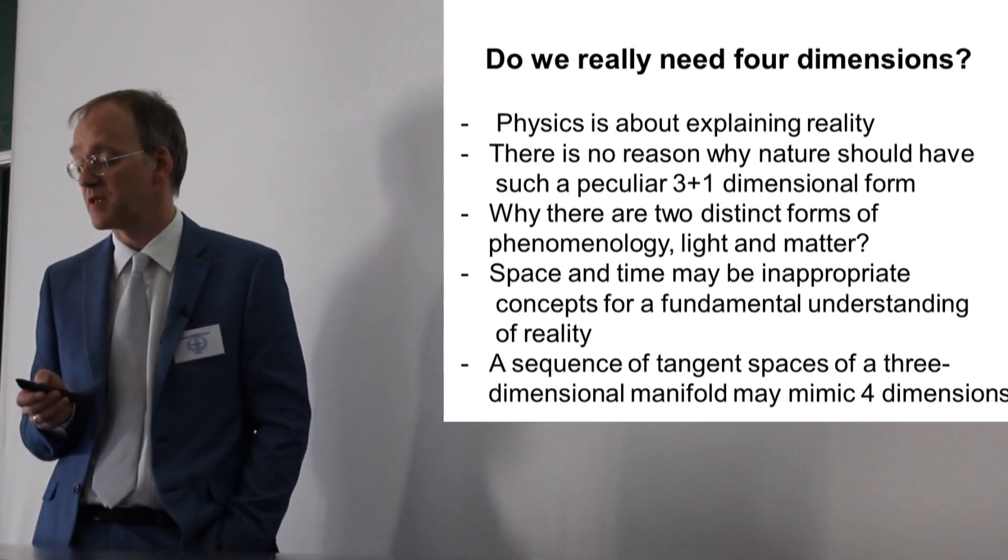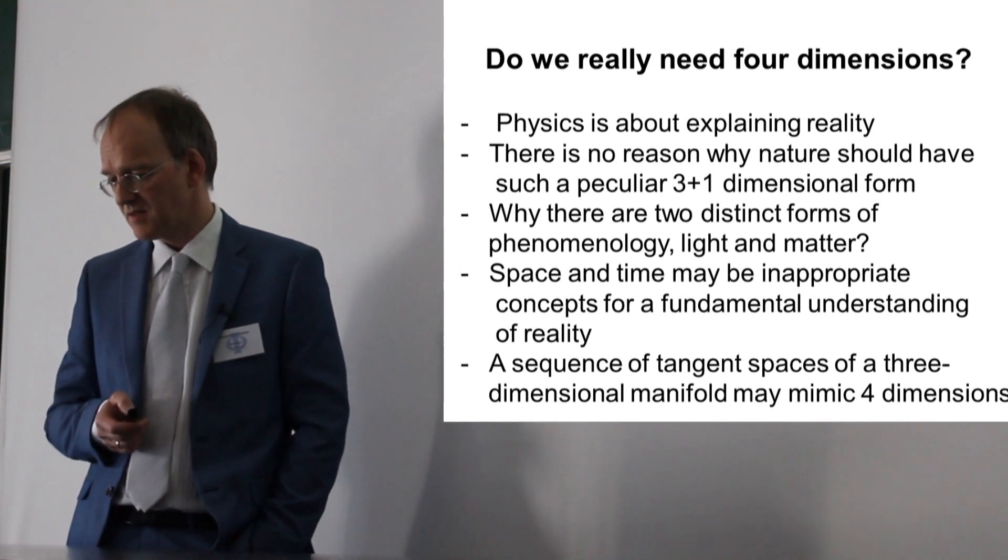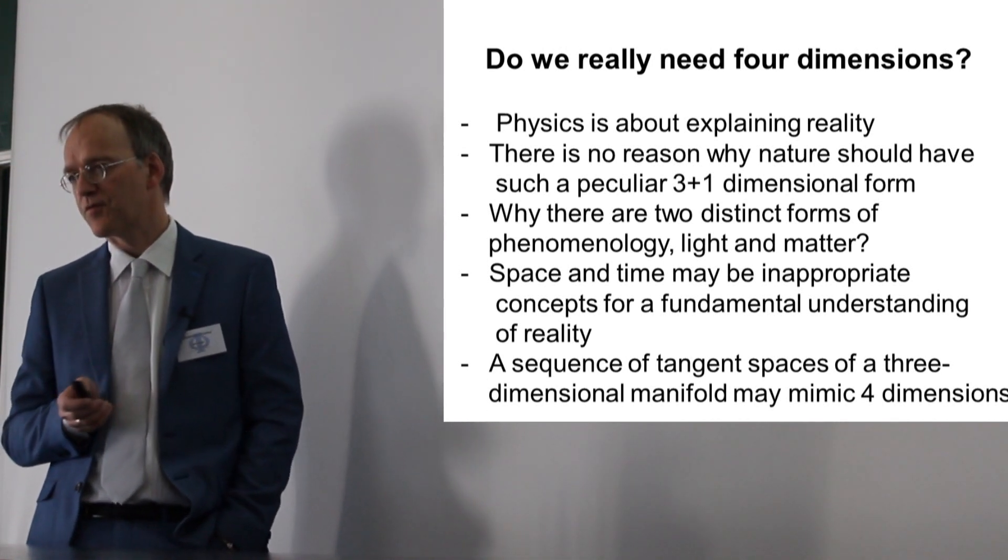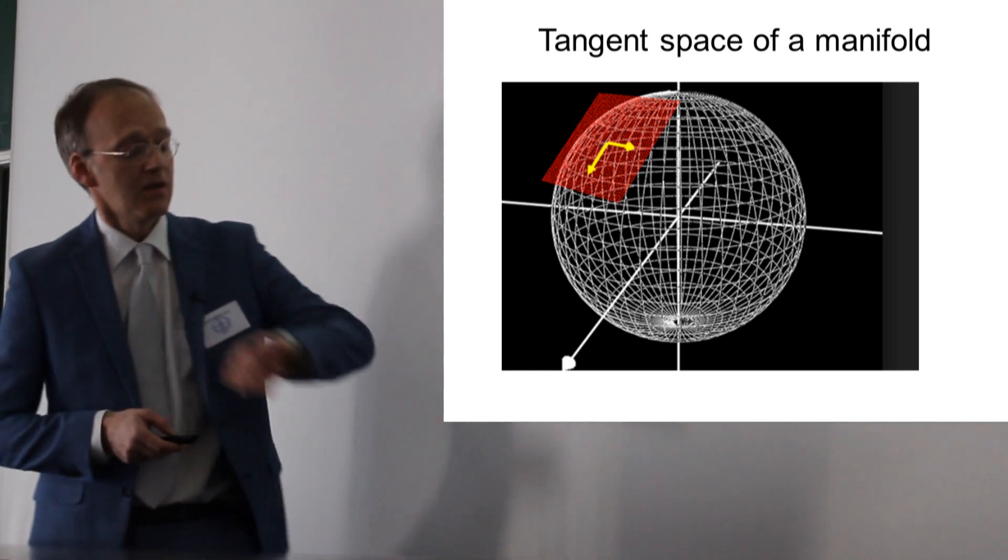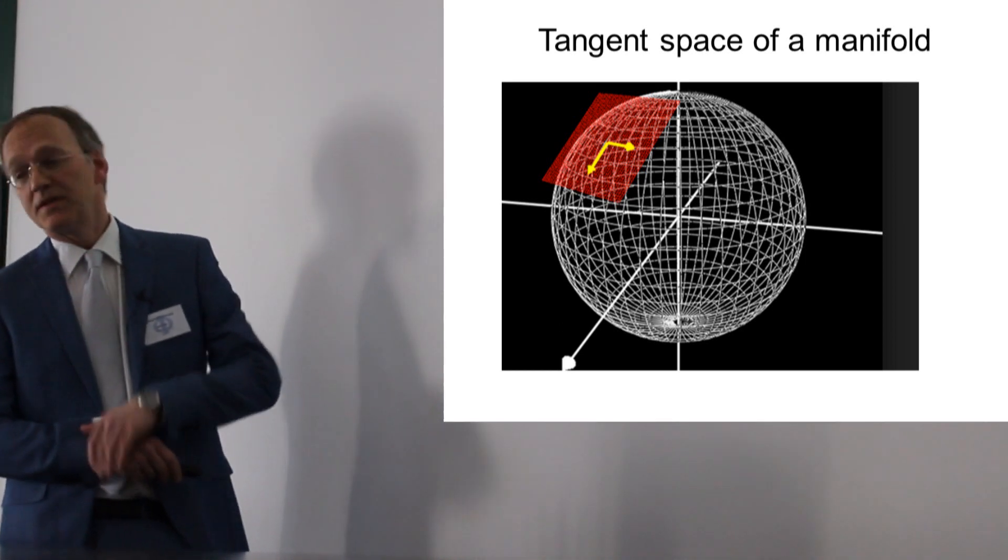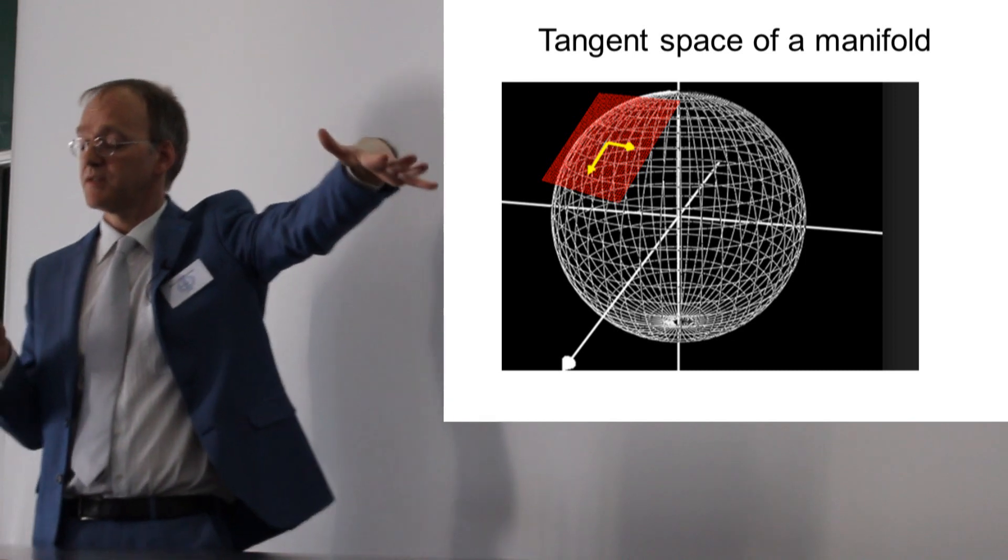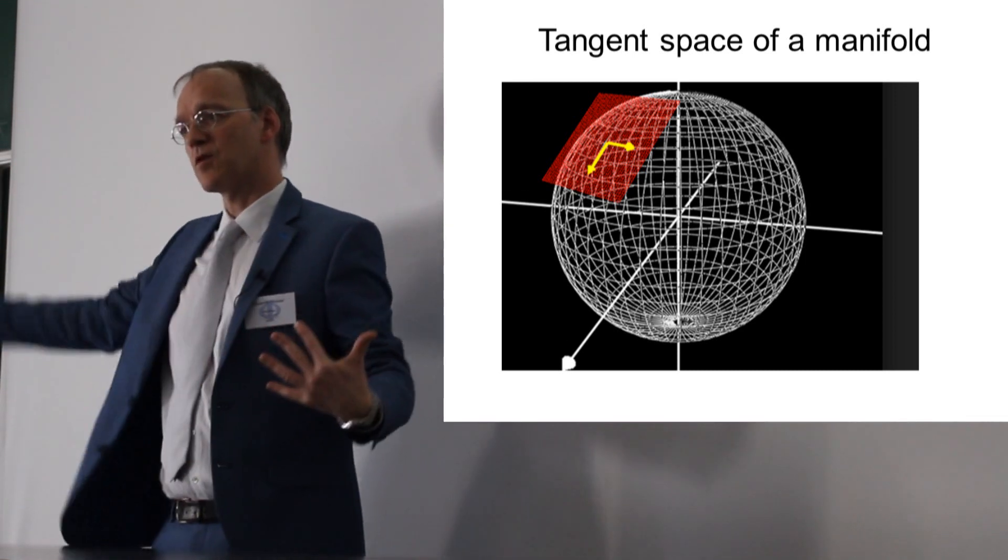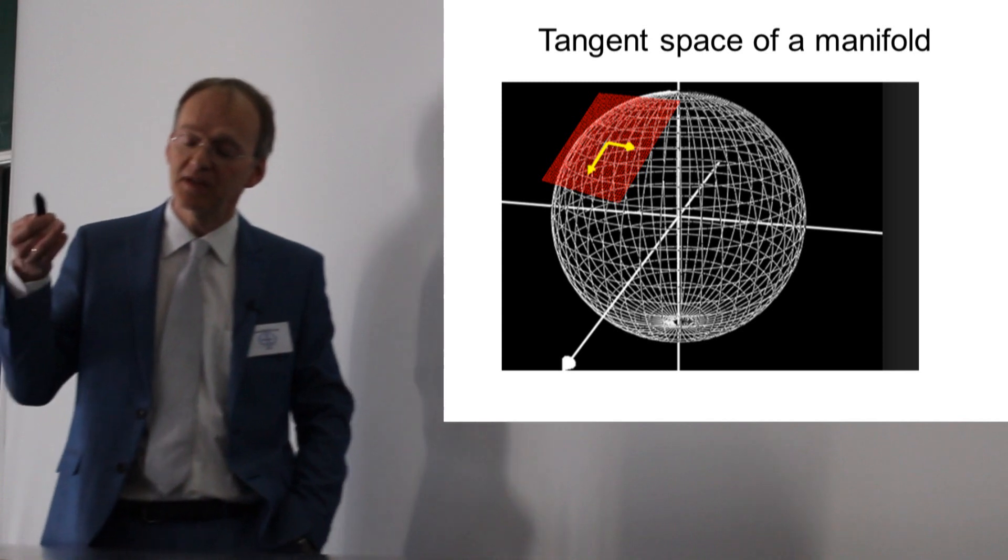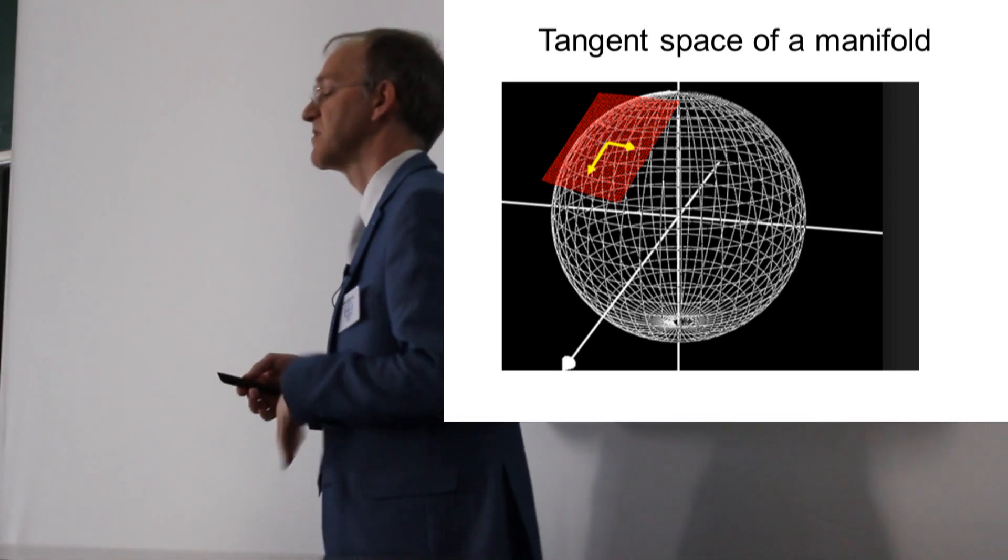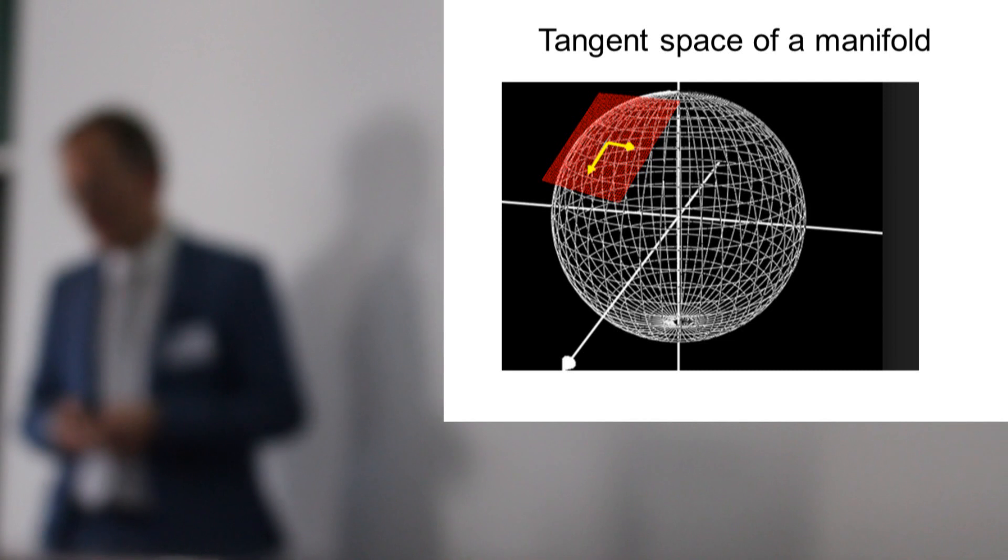Space and time may be inappropriate concepts for a fundamental understanding of reality. A sequence of tangent spaces in a three-dimensional manifold may indeed mimic four dimensions. This is a tangent space, and I depicted here a two-dimensional surface. If you imagine a sequence of two-dimensional surfaces here, every surface is different. If you go along in the sphere, you see a sequence of two-dimensional spaces. The same holds in three dimensions. So our reality could be indeed only three-dimensional, and we're looking out at the tangent space and see some sequence we perceive as time.